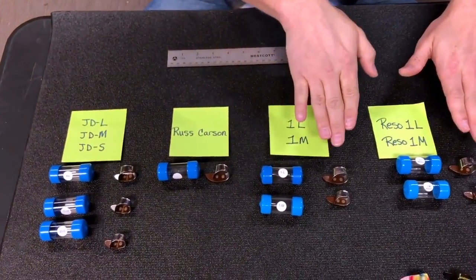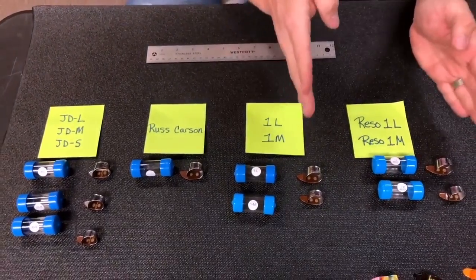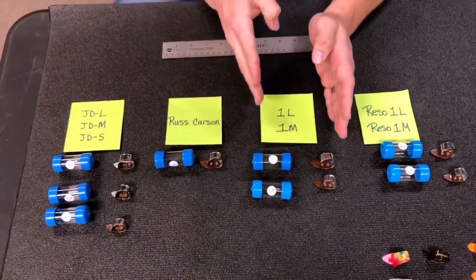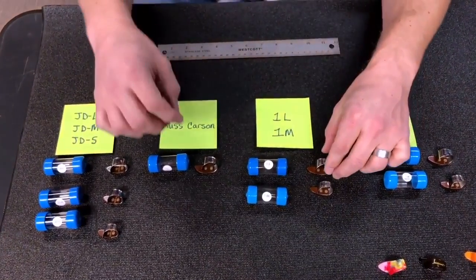Now let's move along. Since we have the same basic blade profile, this one's a little beefier on the Rezo, but basically they're pretty similar, just the thickness. So moving on, let's compare these two.